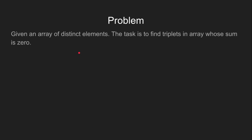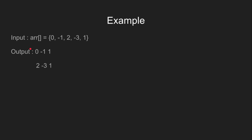Here's the problem: given an array of distinct elements, the task is to find triplets in an array whose sum is zero. Let's look at this example. The output for this array is this and this, as both of them have a sum equal to zero.